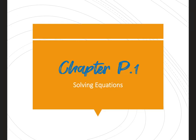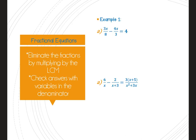We're going to start with P1, solving equations. Nothing in Chapter P is brand new, so hopefully this is easy stuff, though we still make silly mistakes. We have not done rational equations this year — you did do rational equations in Algebra 1 and Algebra 2 — but as a refresher: if there's a fraction in your equation, one way to deal with it is to eliminate the denominator by multiplying by the least common multiple.